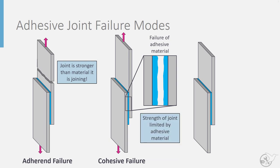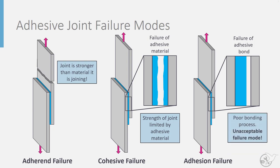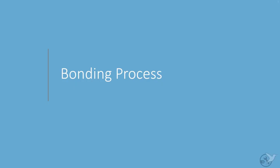This failure mode is limited by the strength of the adhesive material. Conversely, if the chemical bonds that glue the adhesive material to the part being joined are overcome by the loading, failure can occur along the interface between the adhesive material and these parts. This failure mode is known as adhesive or adhesion failure, and is limited by the quality of the chemical bonds formed during the bonding process. This failure mode is not acceptable for aircraft structures, and if it occurs, it is a sign that there were problems with the bonding process itself. It is important to understand the basic steps within the bonding process in order to understand the potential risks for adhesion failure in a bonded joint.